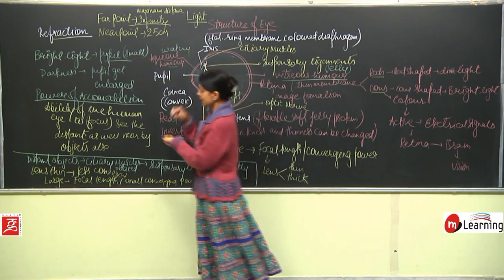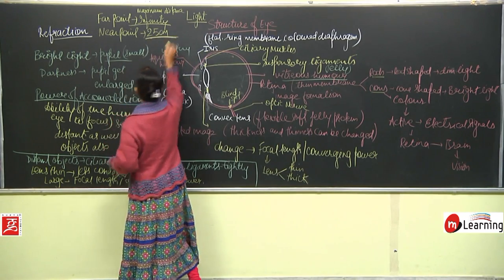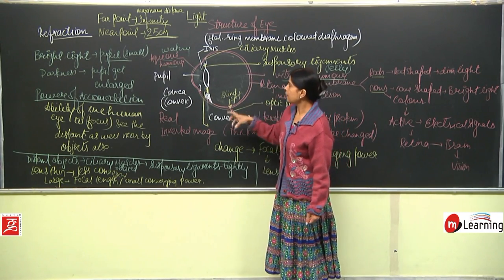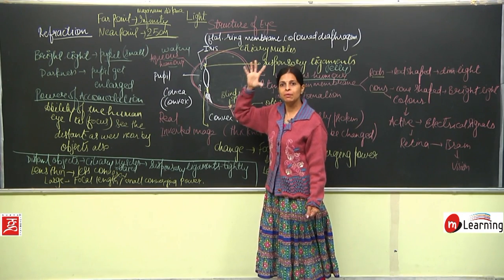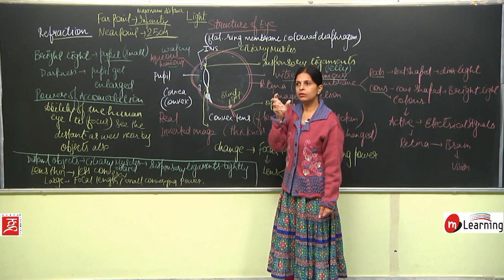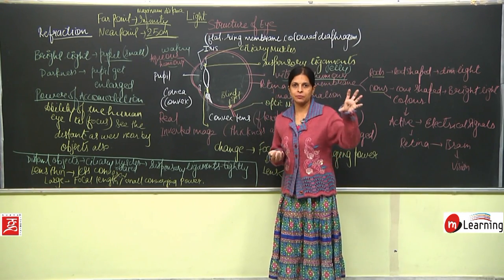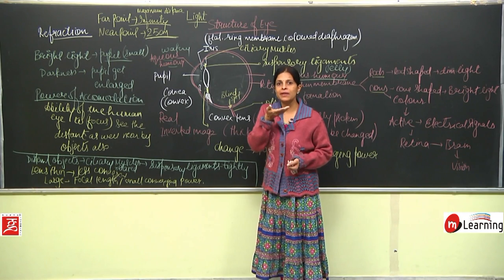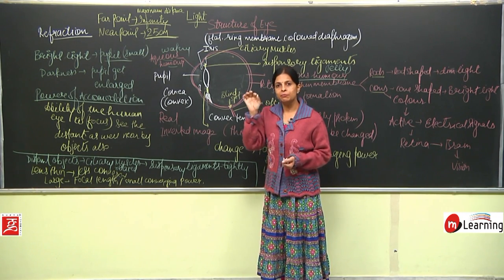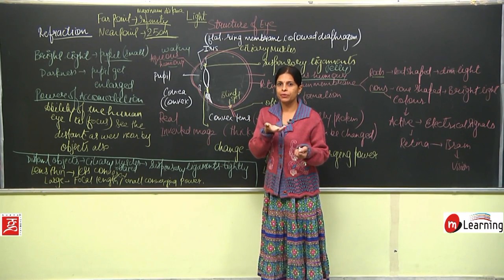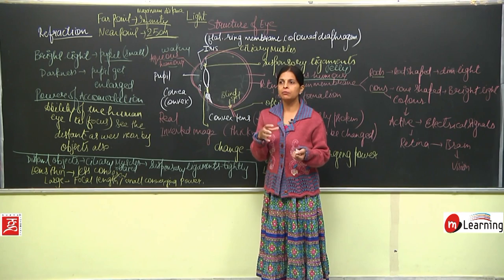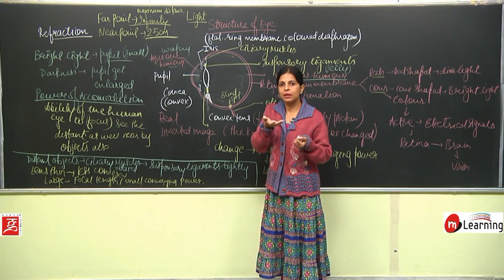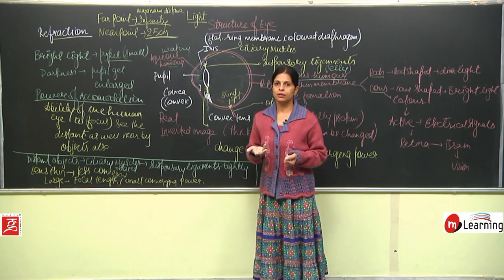When we cannot read a textbook closer than 25 centimeters, it is because the eye is at its maximum accommodation level. The lens has reached maximum thickness and cannot become any thicker. So if the book is kept less than 25 cm away, we would not be able to read it properly.